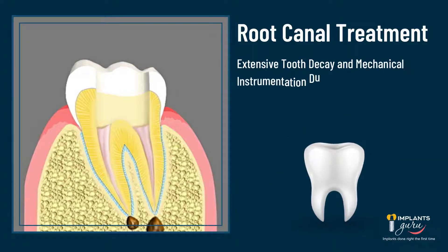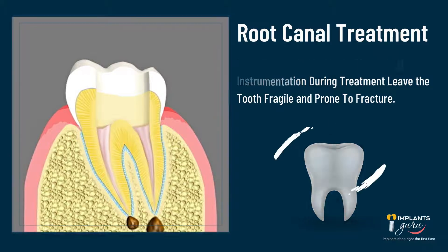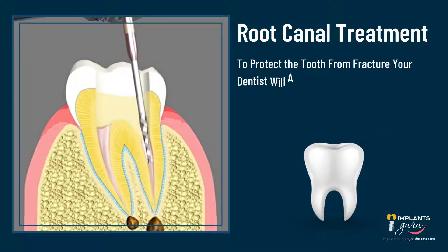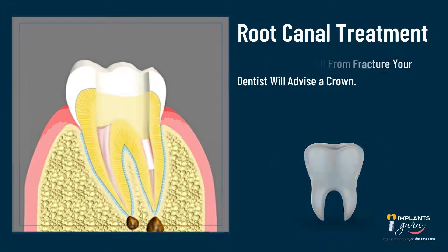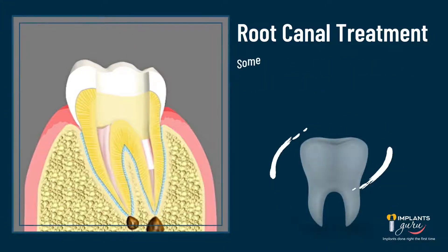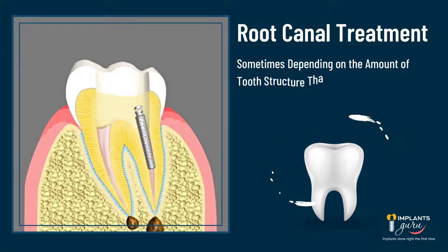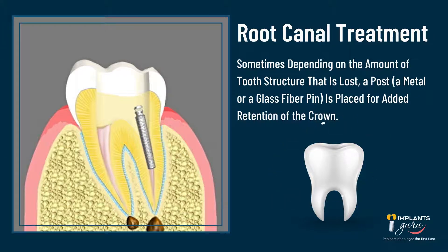Extensive tooth decay and mechanical instrumentation during treatment leave the tooth fragile and prone to fracture. To protect the tooth from fracture, your dentist will advise a crown. Sometimes, depending on the amount of tooth structure that is lost, a post — a metal or a glass fiber pin — is placed for added retention of the crown.